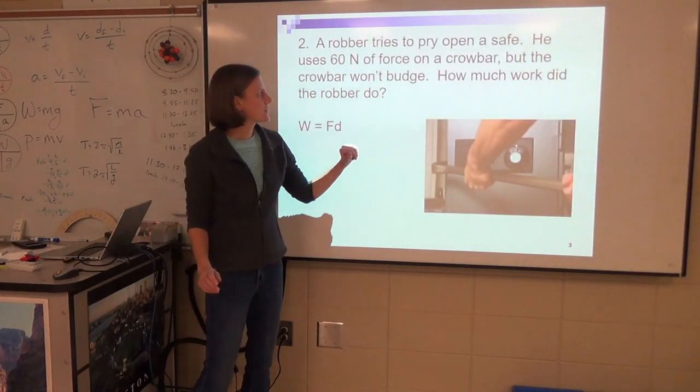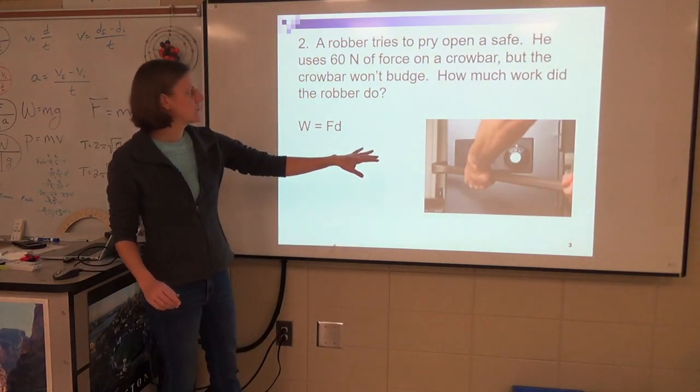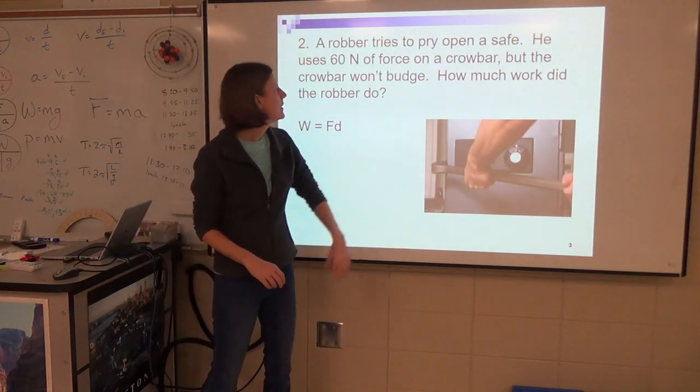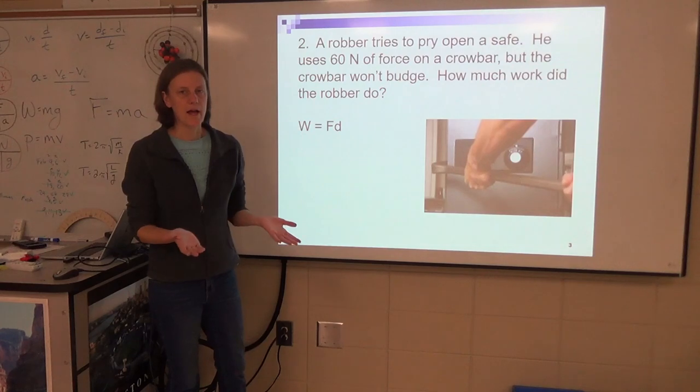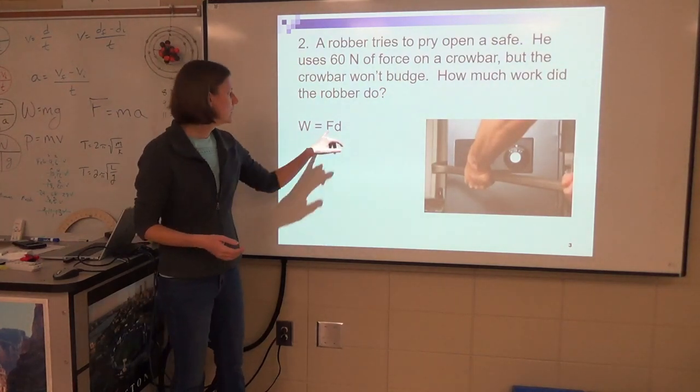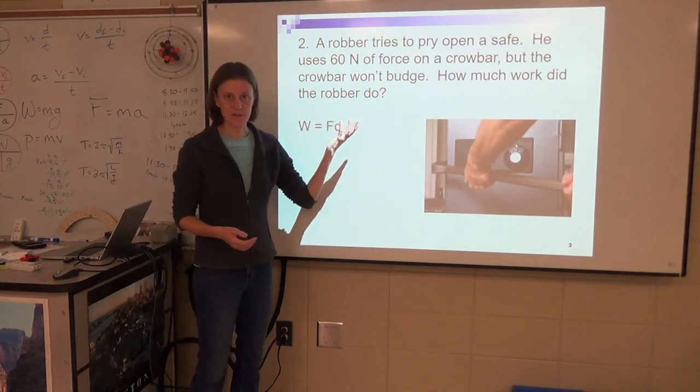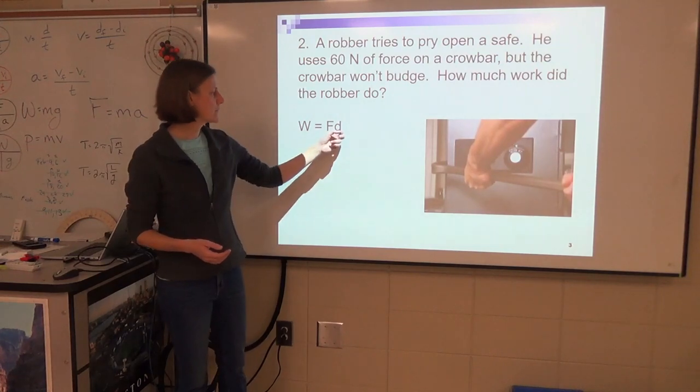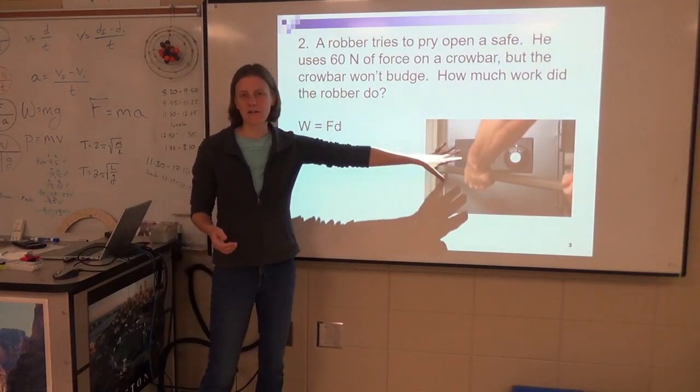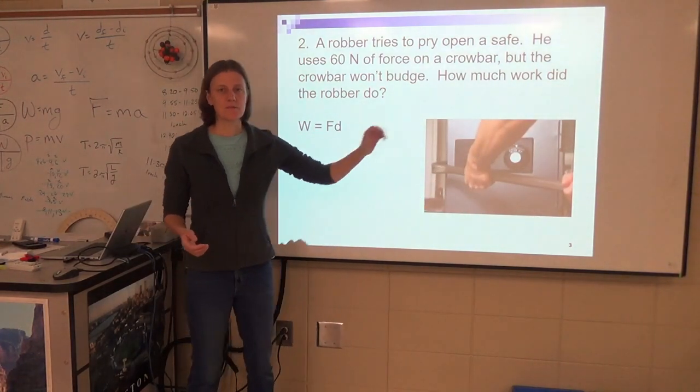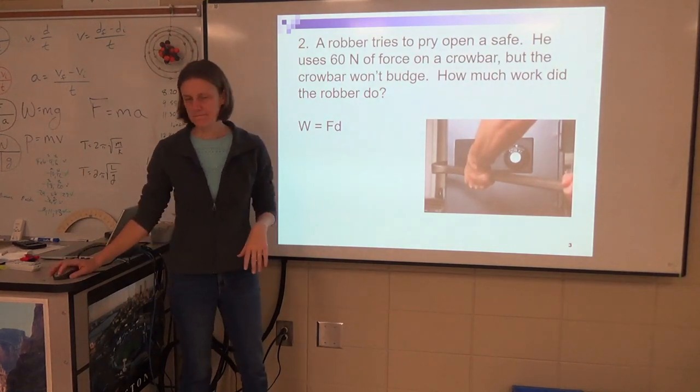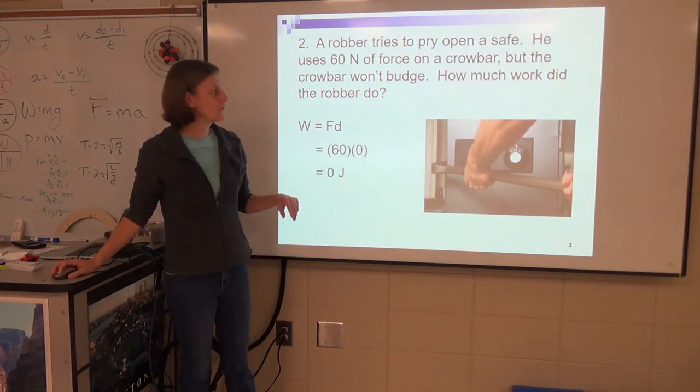Another question: a robber tries to pry open a safe. He uses 60 Newtons of force on a crowbar, but the crowbar won't budge. How much work was done? Well, I know the force is 60, but if there was no distance, it doesn't matter how hard he's trying. If something doesn't move a distance, we don't say work was done. So that would be zero joules.